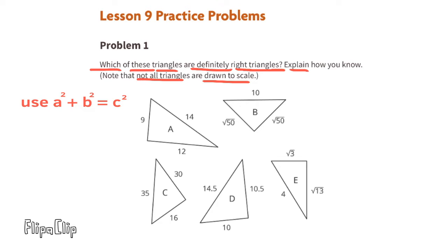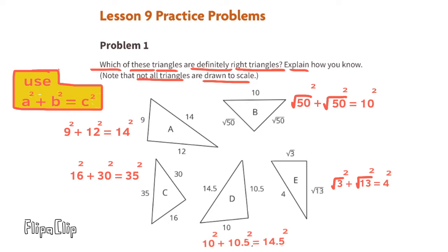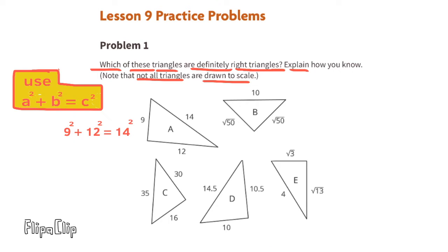They've given us the side lengths for all the triangles, and I've placed them in equations so that we can use the Pythagorean theorem. The ones that are true will be right triangles; the ones that are not true won't be right triangles. Since 9 squared plus 12 squared does not equal 14 squared, triangle A is not a right triangle.